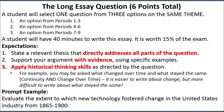The expectations are that you can state a relevant thesis that directly addresses all parts of the question, that you can support your argument with evidence using specific examples, and that you can apply the historical thinking skills as directed by the question. There are three big historical thinking skills to focus on: causation, comparison, and continuity and change over time. A lot of students run into this issue — it's easier to write about change, but it's more complicated to write about what stayed the same, and the College Board is asking you to do both.